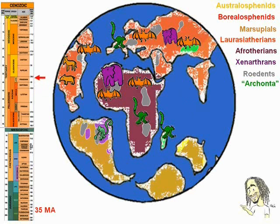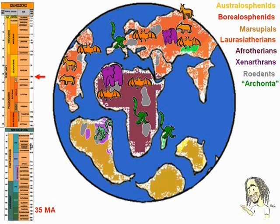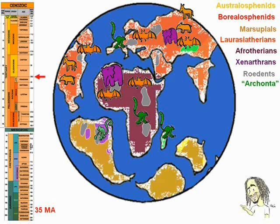35 million years ago, horses and tapirs spread to Asia. India, in its journey north, finally reached Asia, whose collision will elevate the Himalayas. Then the Indian fauna changed and became full of Laurazatherians. Australia and South America were isolated from Antarctica, making it an island. These ocean currents acted as a refrigerator coil, and Antarctica gradually froze, becoming sterile. The total freezing of Antarctica and disappearance of its forests was completed around this time. The first giant sloths appear in South America.